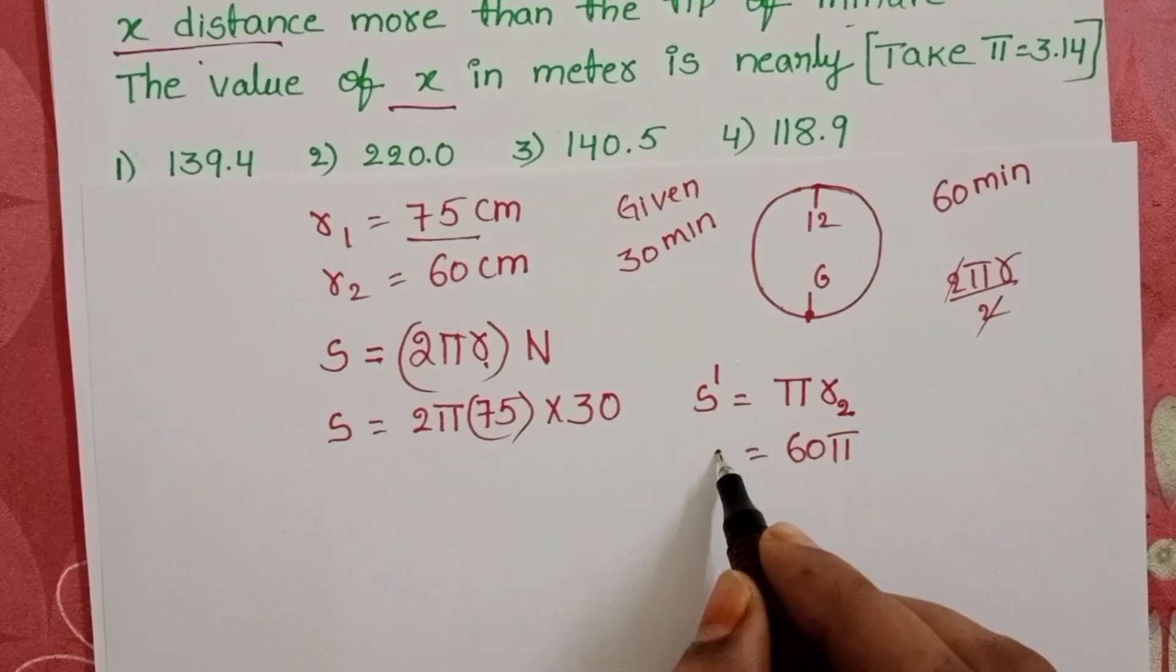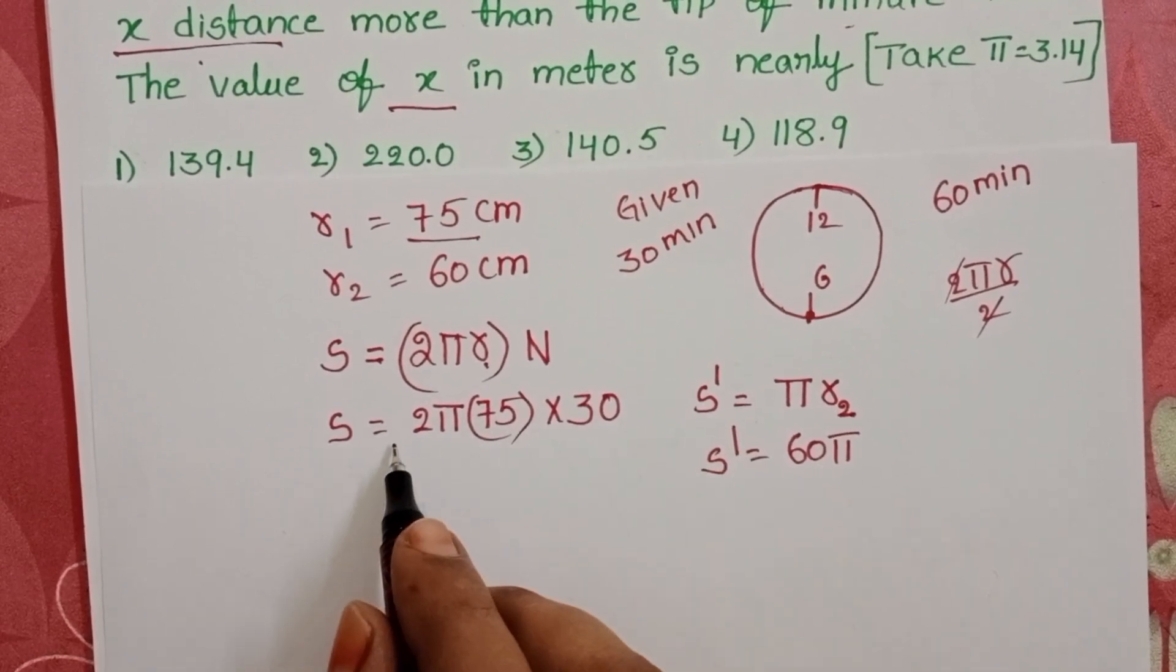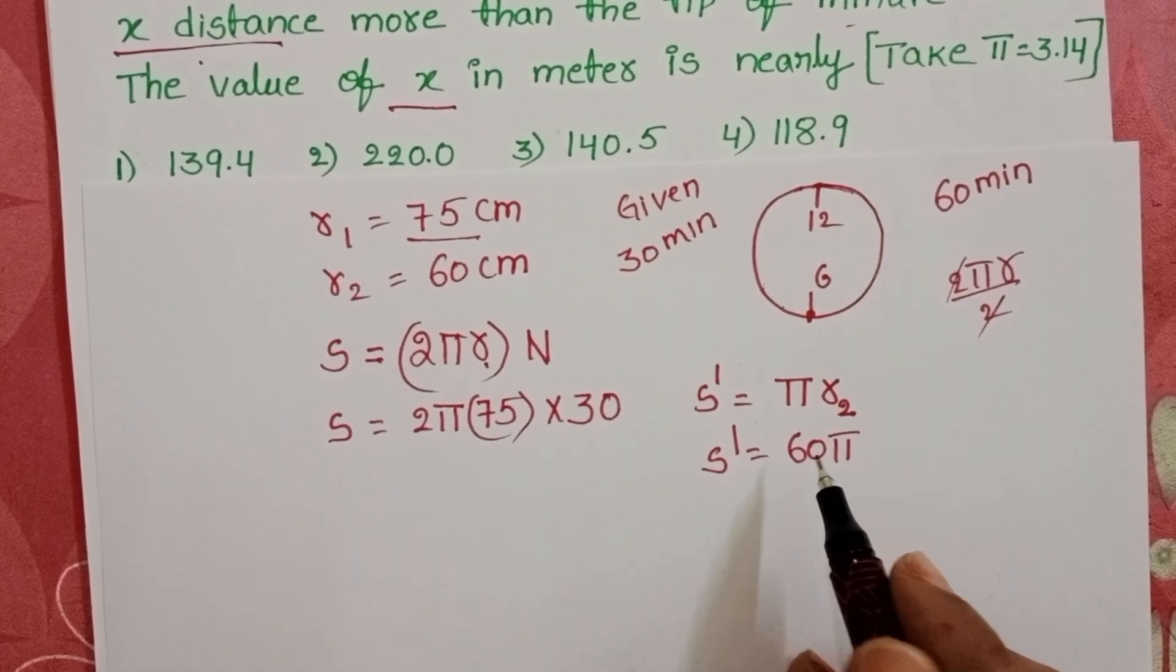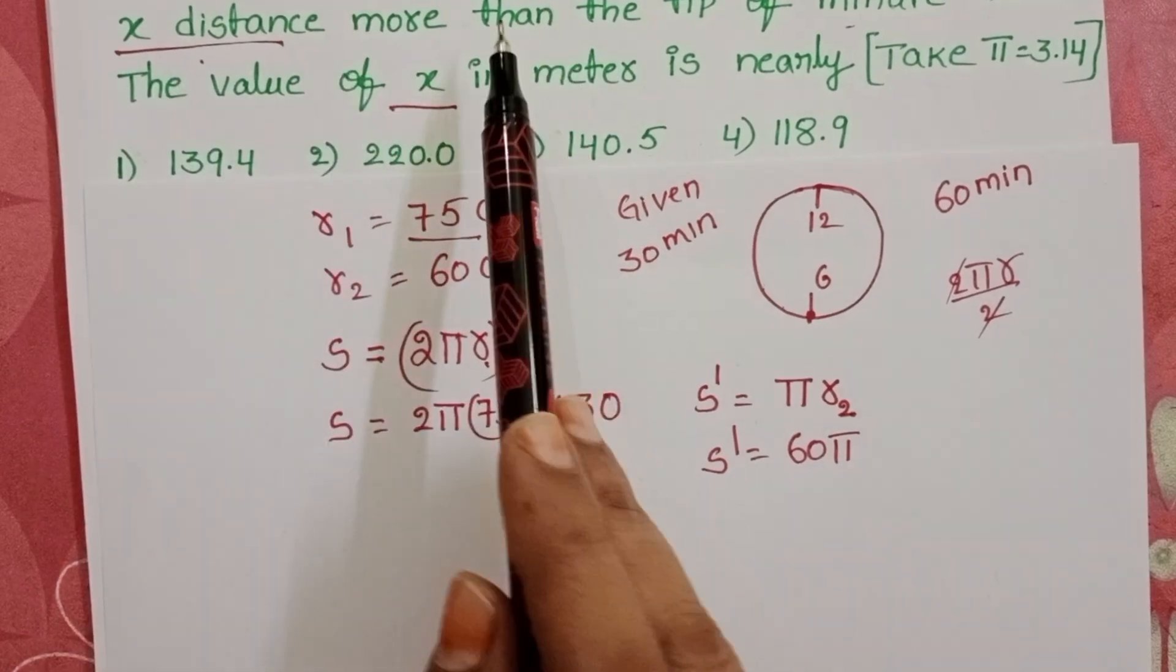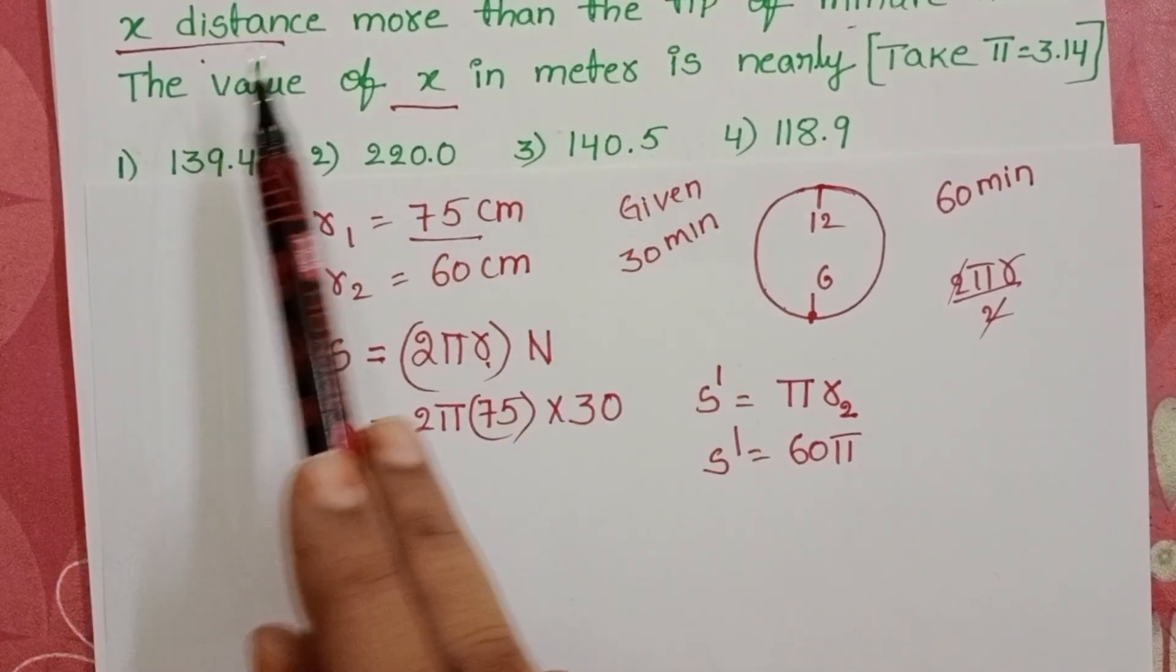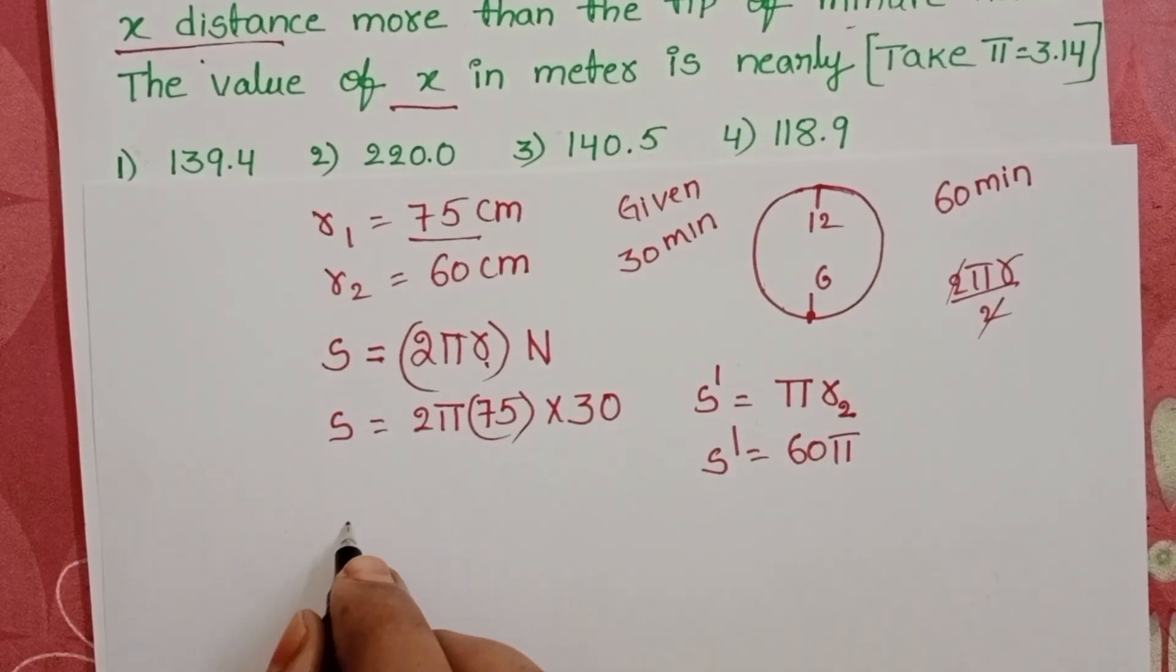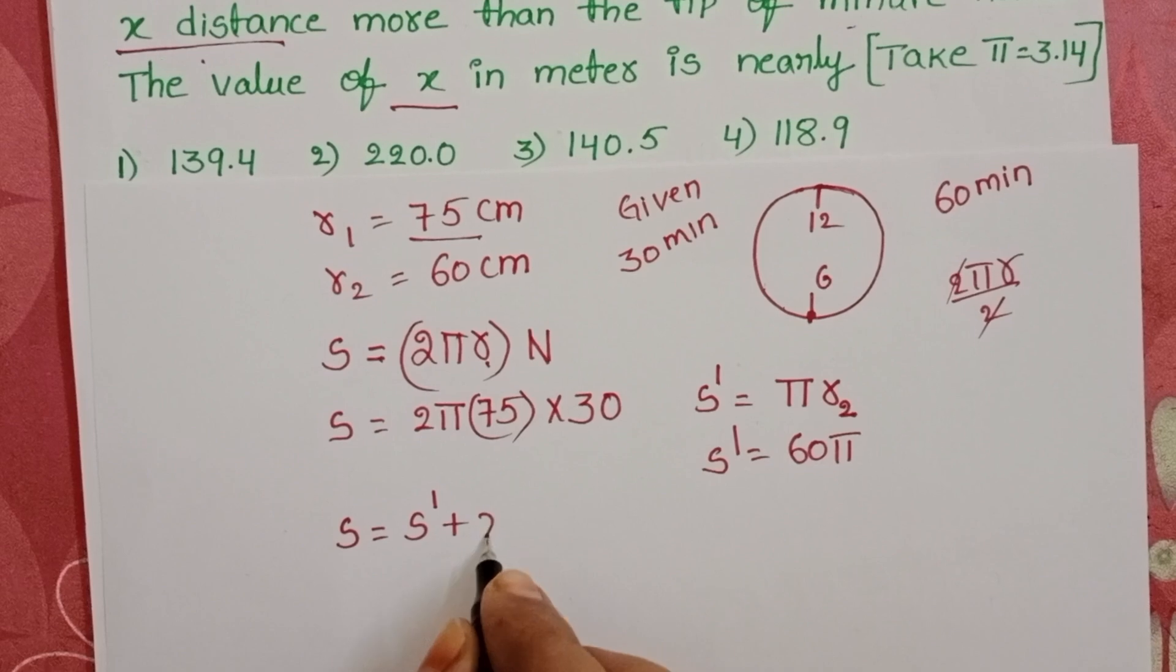It is very clear to us the distance travelled by the second hand is greater than the distance travelled by the minute hand. And the relation is how much it is greater. The distance travelled by the second hand is x distance more than the distance travelled by the minute hand. S is equals to S dash plus x.